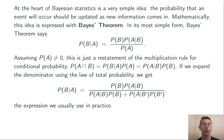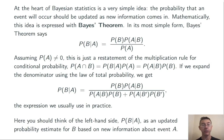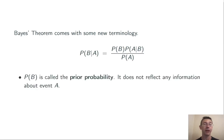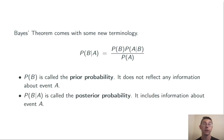I have a whole video on the law of total probability — I'll throw a link up top to that. You should think of the left-hand side of these equations, the probability of B given A, as the updated probability estimate for B based on the new information obtained about event A. In light of that interpretation, Bayes' Theorem comes with some additional terminology. The probability of B is called the prior probability — it doesn't reflect any information about event A. The probability of B given A, that is to say the left-hand side of this equation, is called the posterior probability, and it does include information about event A.